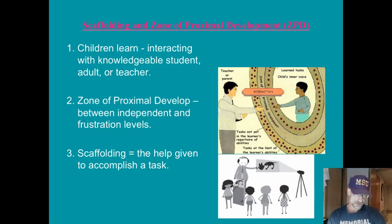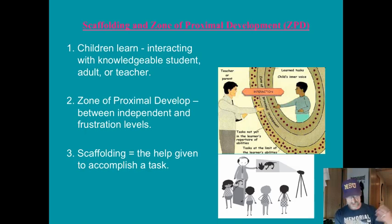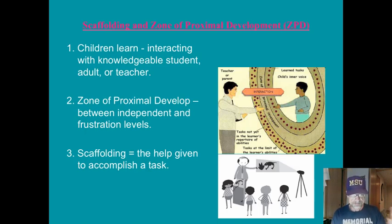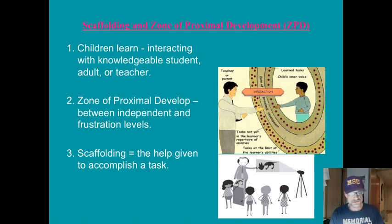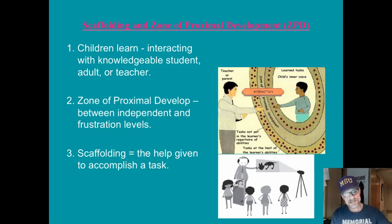Children learn by interacting with knowledgeable others — could be a student, an adult, or a teacher — hearing the thoughts of others. This concept translates into the zone of proximal development. Hold onto this idea; it will come into focus more clearly over the next couple of minutes.